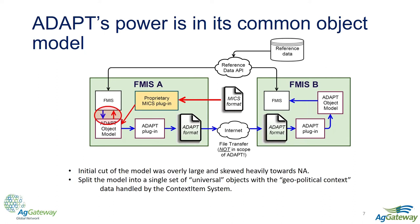The geopolitical context dependent data was spun off into a separate context item system. This context item system is essentially a glorified key-value pair that allows us to tag this context-dependent data onto objects in the common object model as needed. Other webinars will address the context item system in detail.